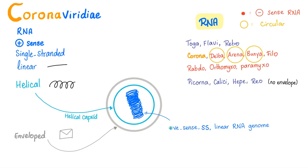The coronavirus is positive-sense RNA. In fact, all RNA viruses are positive-sense except the red ones — Delta, Arena, Bunia, Filo, Rhabdo, Orthomyxo, and Paramyxo are all negative-sense. All others are positive-sense RNA viruses. It's a single-stranded, linear RNA virus. All are linear except three, which are circular.